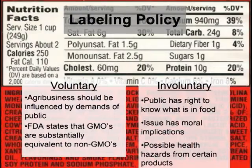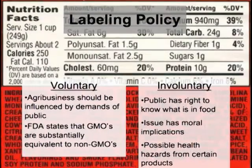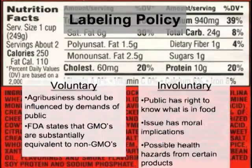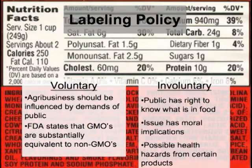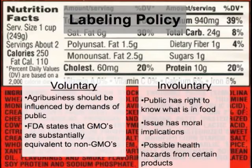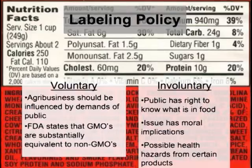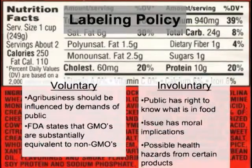One of the most important issues facing GMOs today is labeling policy. This is represented by two arguments: the voluntary and the involuntary. The voluntary argument states that agribusiness should be influenced by the demands of the public, because currently the USDA and FDA state that GMOs are equivalent to non-GMOs. However, the involuntary argument states that the public has a right to know what is in its food, due to uncertainty of impact on health.